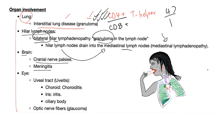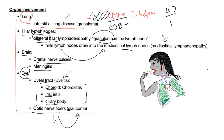In the brain, you can see cranial nerve palsies and meningitis. In the eye, the uveal tract is involved — especially uveitis. The uveal tract includes the choroid, iris, and ciliary body, and you can have inflammation in all of them. Problems with optic nerve fibers can lead to glaucoma. So if I'm reading an exam question describing an African-American female who is 25 years old with glaucoma and coughing, it's sarcoidosis — before I even finish the question.